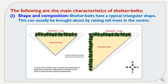Now to study the main characteristics of shelter belts. The first characteristic is shape and composition. Shelter belts have a typical triangular shape, which can usually be brought about by raising tall trees in the center. Shelter belts are of two types: shelter belt leg one and shelter belt leg two. Increasing shelter belt leg length will increase the protected zone.